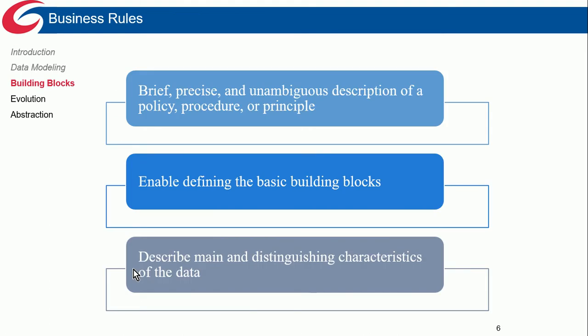To create database models, we first have to understand what we're modeling — the business needs. Business rules apply not just to businesses but to any organization using a database: government, companies, anyone solving a problem with a database. Business rules are a brief, precise, unambiguous description of a policy, procedure, or principle. For example, a policy limiting discounts to no more than 20% of the supplier purchase price would be a business rule.